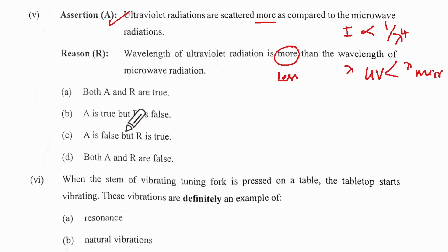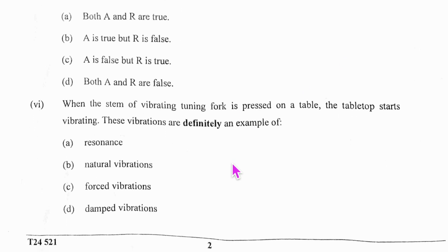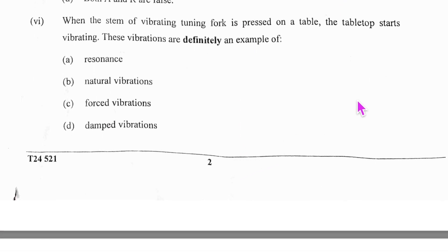When the stem of the vibrating tuning fork is pressed on a table, the tabletop starts vibrations. This is definitely an example of forced vibration because the tabletop gets vibrations under the influence of the external periodic force, which is the vibrating tuning fork.